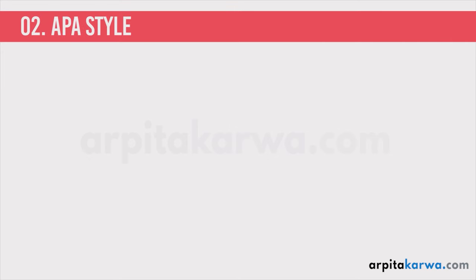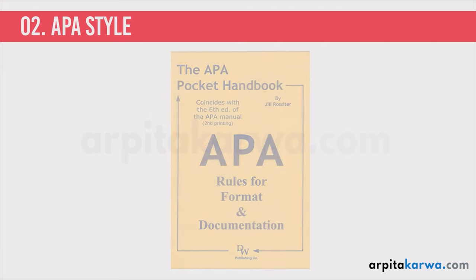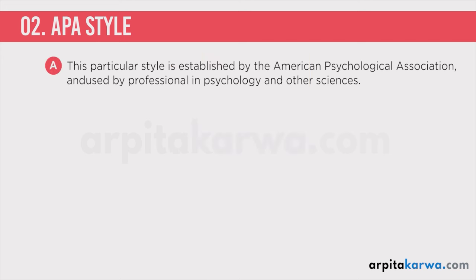In this lecture we are going to discuss the two most commonly used styles, namely APA and MLA. APA format, known as the American Psychological Association format, is one of several different writing formats used for publications, papers, essays, and books. This particular style is established by the American Psychological Association and is used by professionals in psychology and many other sciences.